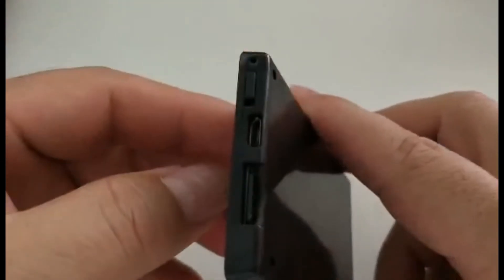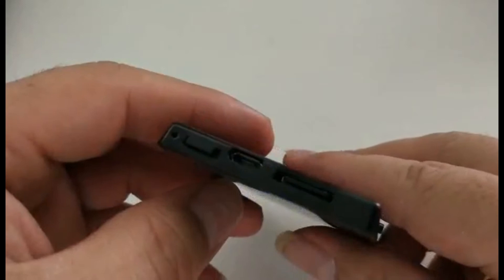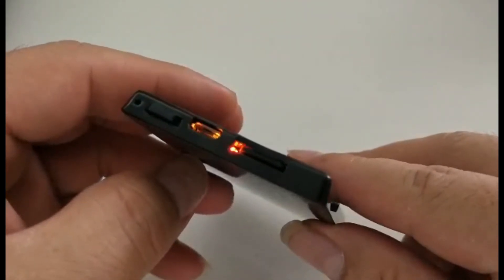Move the power switch to on position. The red and blue LED light turn on for a second, then the red LED light flashes. System goes to standby mode.